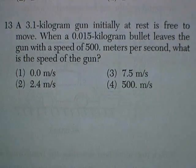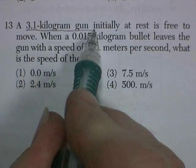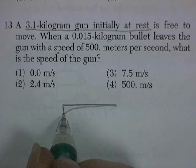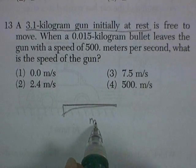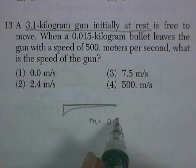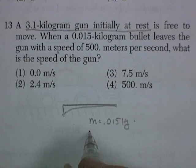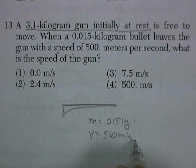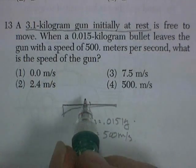Question 13. A 3.1 kilogram gun, initially at rest. I love these problems. It's free to move. When a 0.015 kilogram bullet leaves with a speed of 500 meters per second, what would be the speed of the gun? This is a conservation of momentum problem.